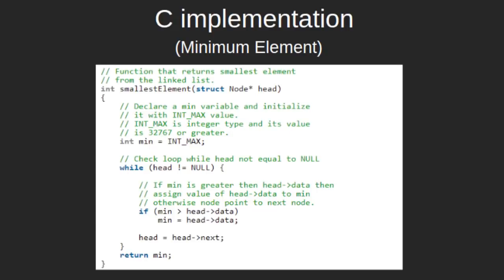Let's see the C implementation of finding the minimum element. The return type of this function is int, since it will return the minimum element which is of integer type. The function takes one argument — the head node of the linked list. Inside this function, we declare a min variable which is initialized with INT_MAX.